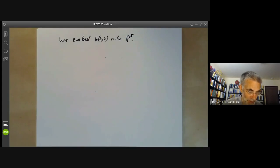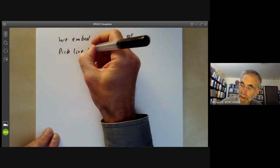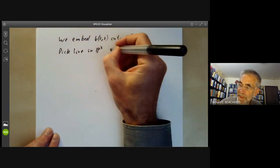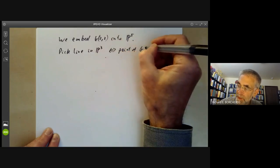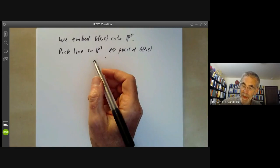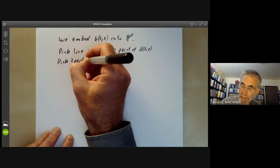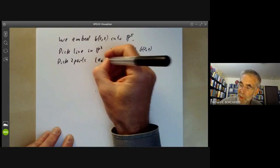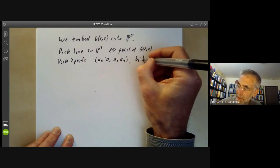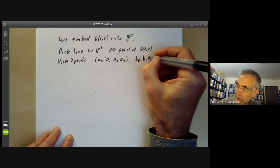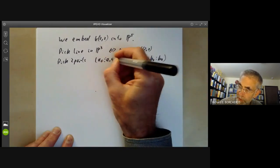So how do we do this? Pick a line in P3 which corresponds to a point of the Grassmannian. And now we can pick two points on the line. So the first point will be A0, A1, A2, A3 and the second will be B0, B1, B2, B3. Yes, these should be colons between them.